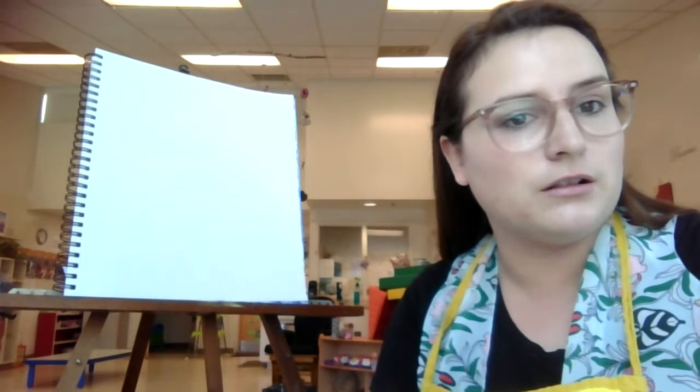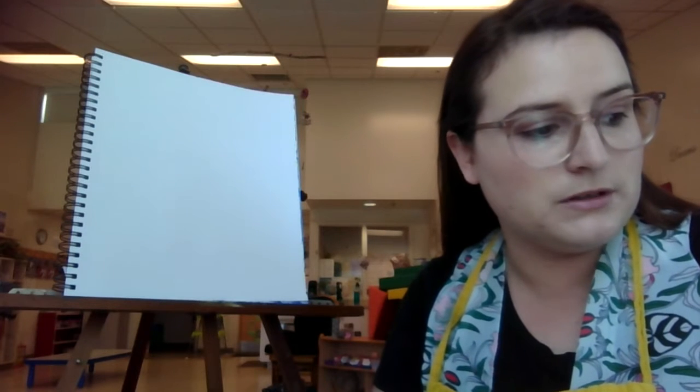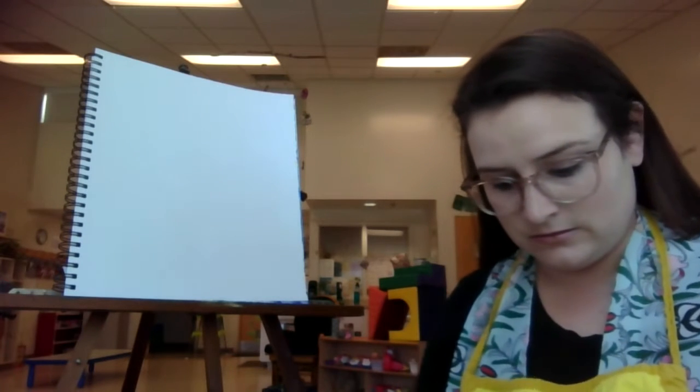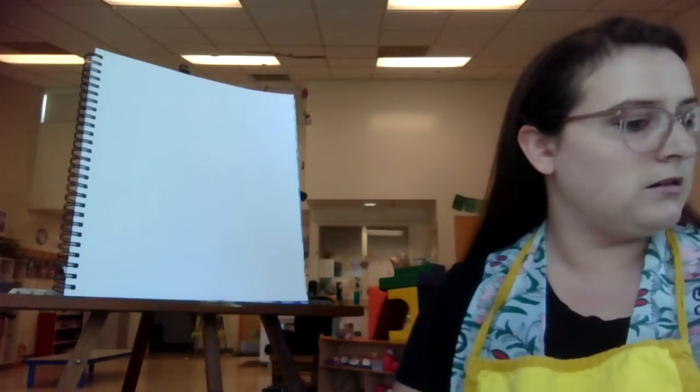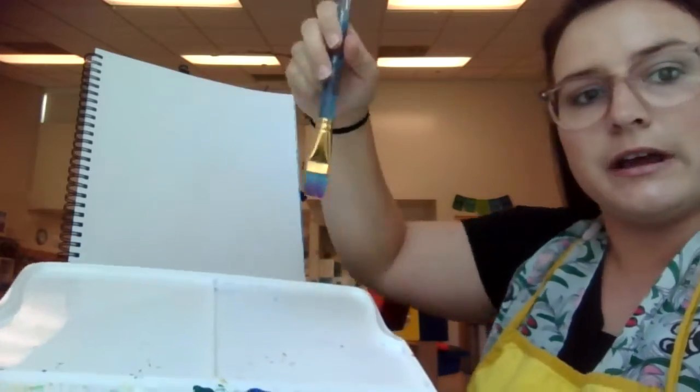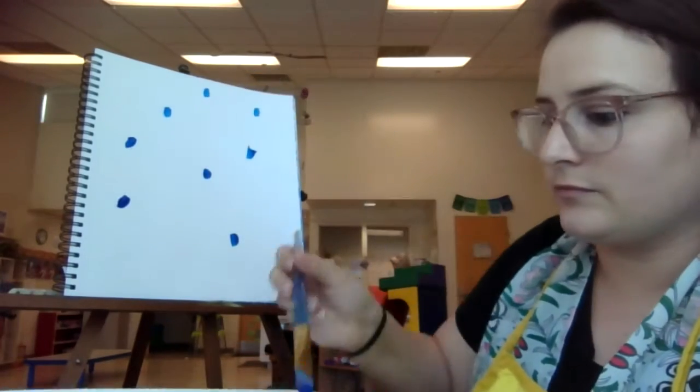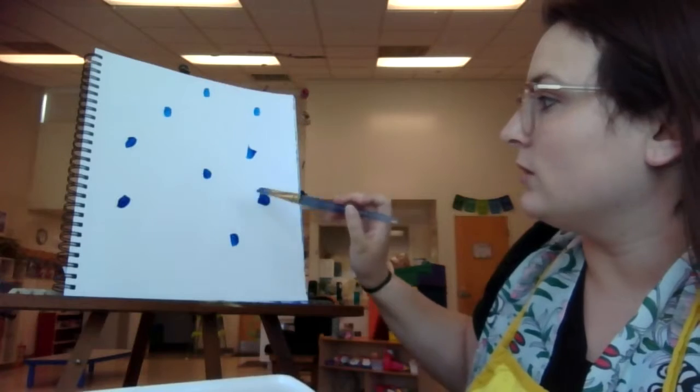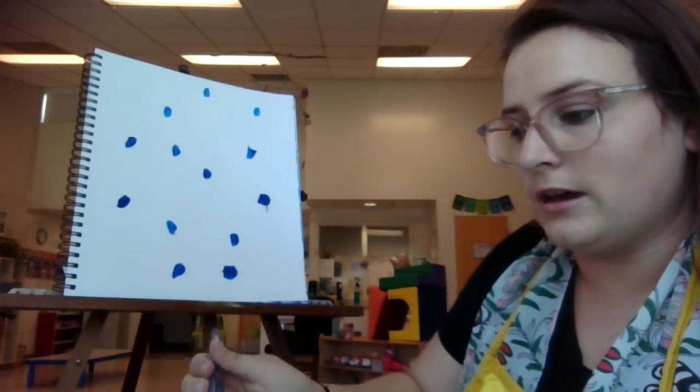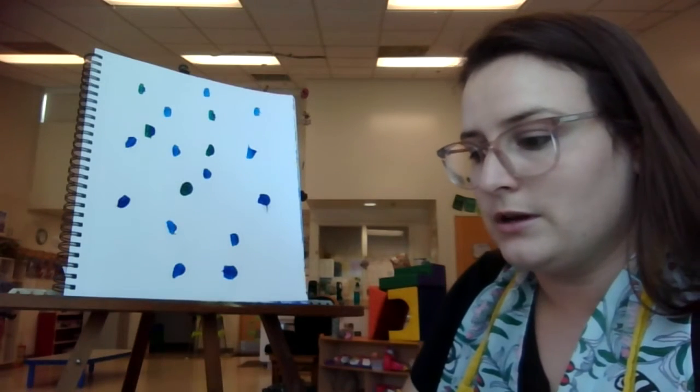So you're going to want to take a large brush. And what we're going to do is we're going to take some blue, some green, and some white. So get that brush wet. Make sure it's clean. I want to take some blue, some green, and some white. And we're just going to lay it, we're going to actually dot it all over the paper in different spots. Get pretty good sizes. Or you can also take the bottle of paint and just squeeze little dots around.